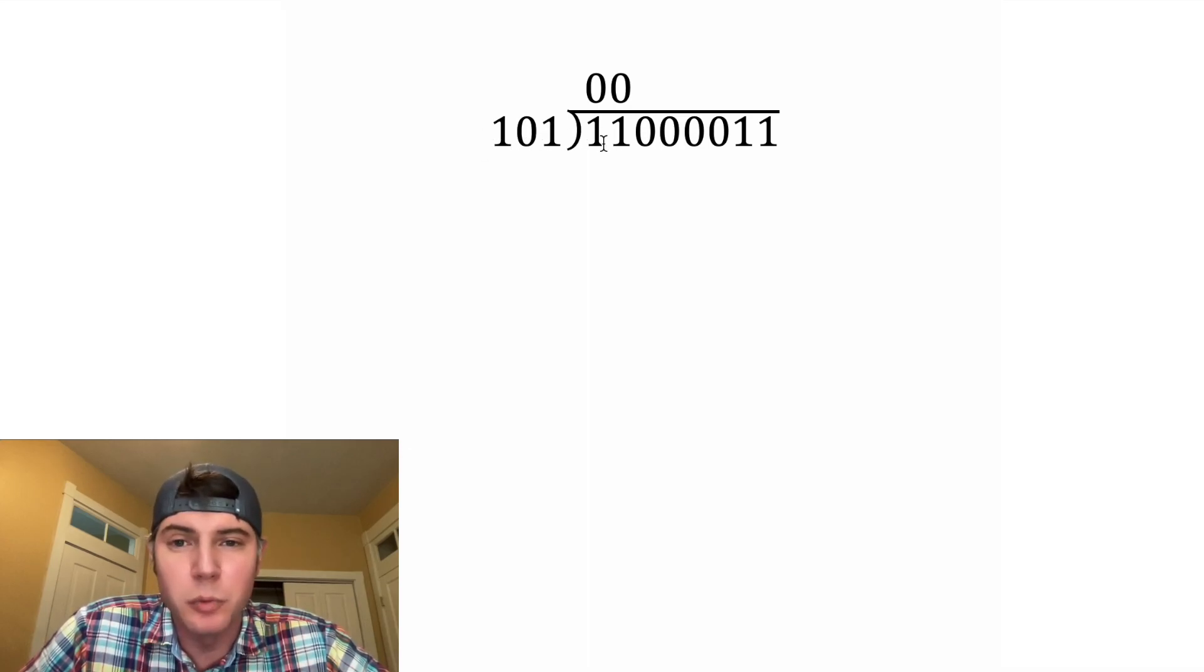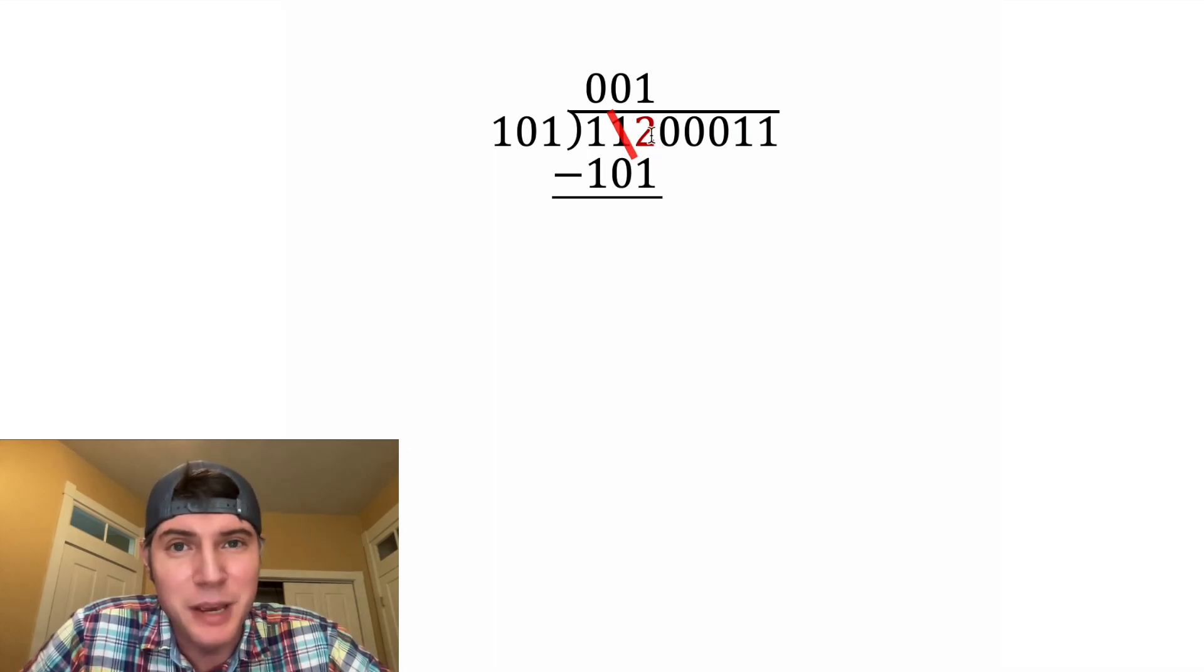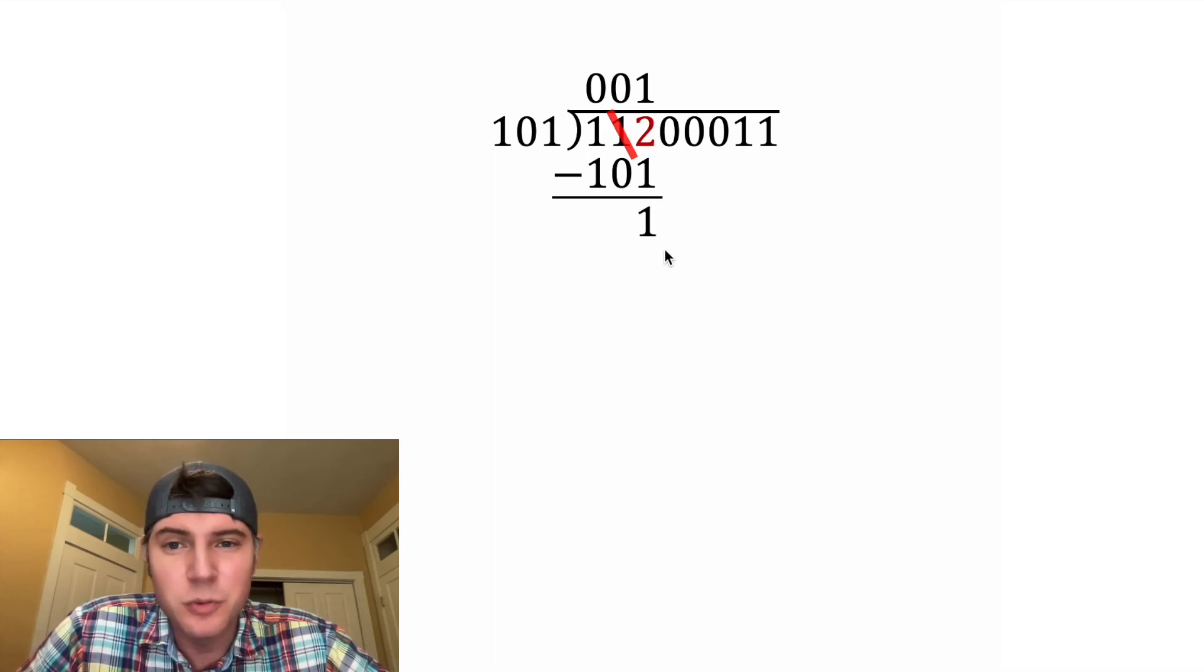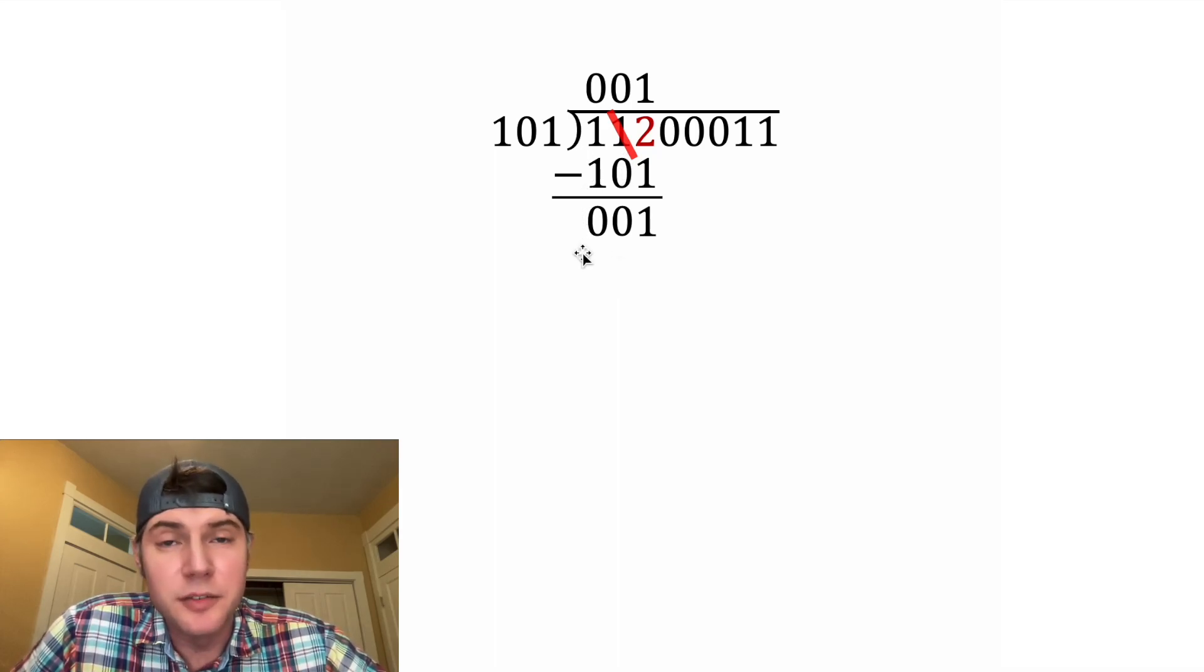How many times does 101 go into 110? Well, that's one time. So then we do 1 times 101 to give us 101, and then we subtract them. Well, we can't do 0 minus 1, so we're going to borrow from here, and that's going to make this a 2, because in binary it's base 2. 2 minus 1 gives us 1, and then 0 minus 0 gives us 0, and 1 minus 1 gives us 0.